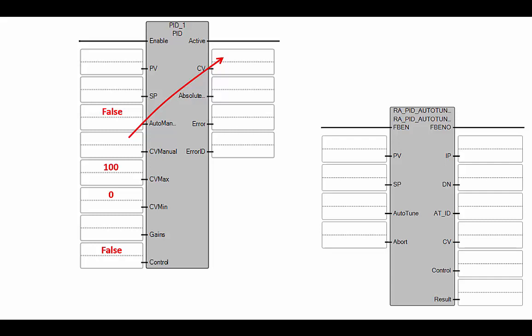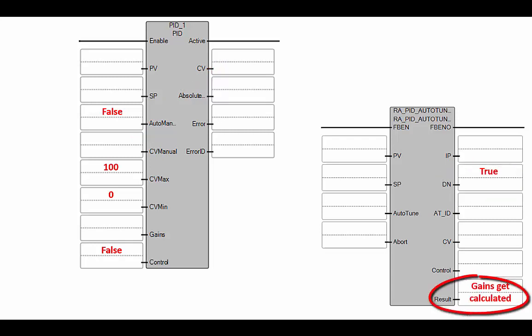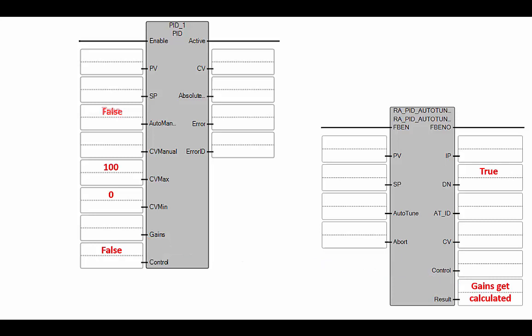Basically, if we put the PID in manual mode and the auto-tuning instruction in auto-tune mode, then the CV from the auto-tuning instruction is what's actually controlling our process. You'll see that auto-tuning will increase and decrease the level of the tank to get a feel for the oscillations. Once the auto-tuning has finished its procedure, the done bit will become true and the result output will have our calculated gains. If we then pass these gains into the PID controller and turn it to automatic mode, our PID controller will control the process using the new gains.